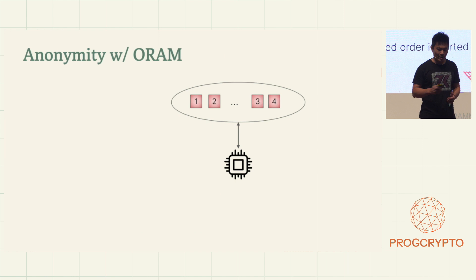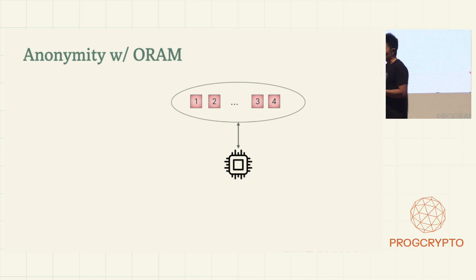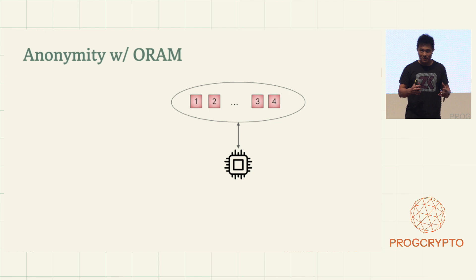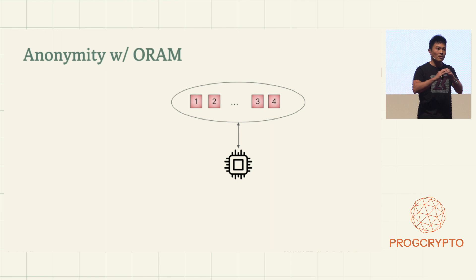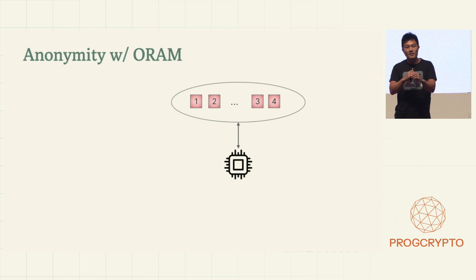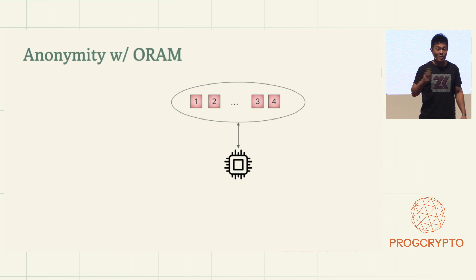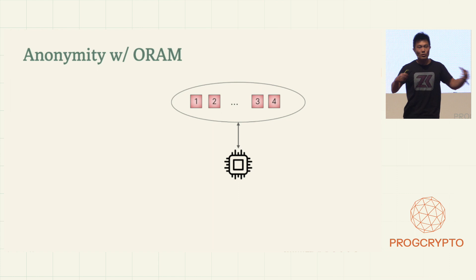We used ZK nullifier pools for anonymity — can oblivious RAM be used for anonymity as well? It's similar in that we're trying to hide access patterns. The key difference is that for oblivious RAM, the action is taken from the compute unit, not from the user — because the data is logically owned by the MPC or trusted hardware module. For the ZK nullifier pool, the data is owned by the user and the user initiates the action. Nevertheless, oblivious RAM can still be used for anonymity — for example, in MobileCoin it was utilized to get Zcash-like privacy.